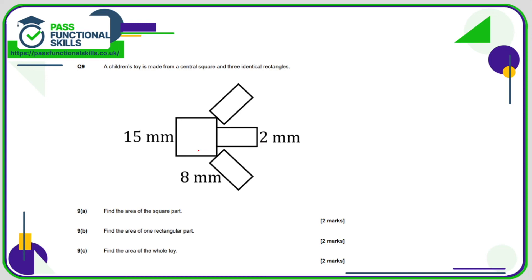And the final question, question 9. This is a calculator question. The square part is 15 millimetres by 15 millimetres. So 15 times 15 is 225 square millimetres. One rectangular part is 8 times 2, which is 16 square millimetres. So the area of the whole toy is 16 plus 16 plus 16, 48, 48 plus 225. Again, you're going to use a calculator, which is much easier. And that comes to a total of 273 square millimetres.